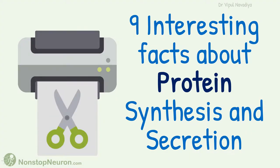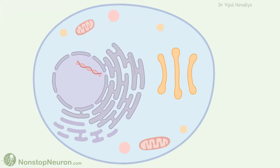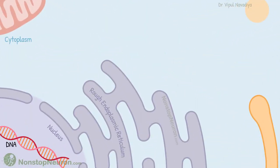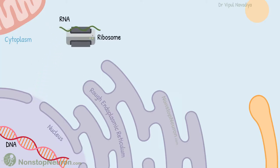Hello, in this video we will see 9 interesting facts about protein synthesis and secretion. Let's get started. This is a cell. Its nucleus contains DNA. The RNA is synthesized using DNA as a template. Then it exits the nucleus and goes to ribosomes. Ribosomes synthesize proteins using this RNA. So let's see the interesting part.